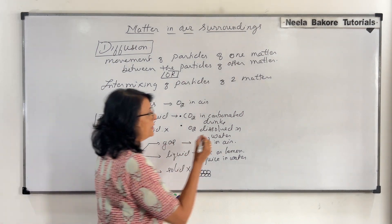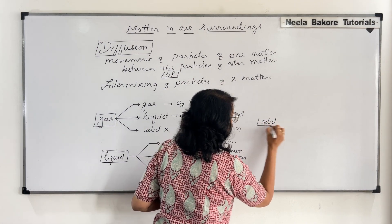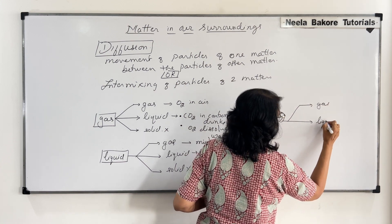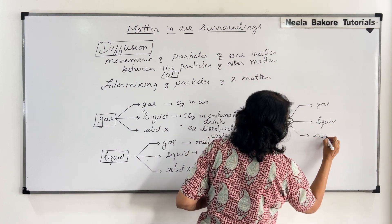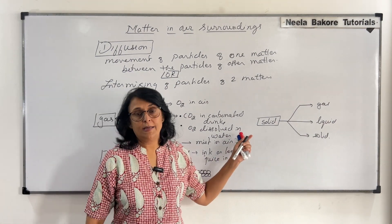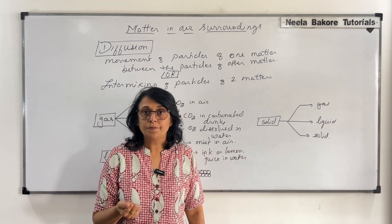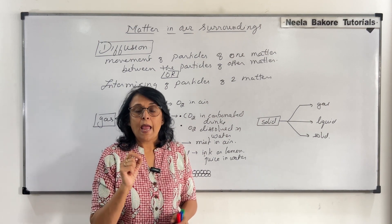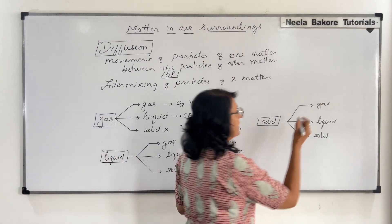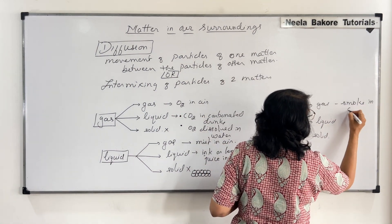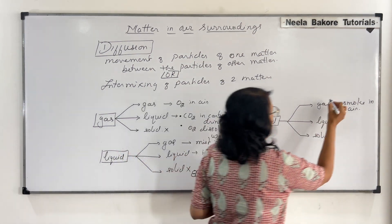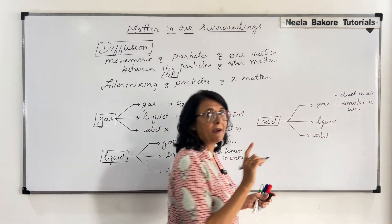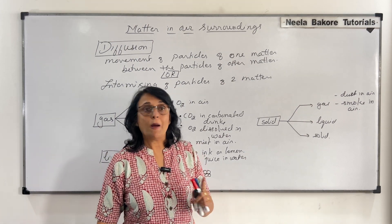Suppose one matter is solid and it is moving through gas, liquid, or another solid. Solid through gas: when we see smoke, the unburnt carbon particles which are blackish are solid, and they are moving through air. So the example here is smoke in air, or even dust particles in air — solid particles, one matter, moving between the particles of air, another matter.